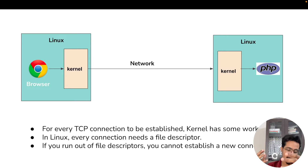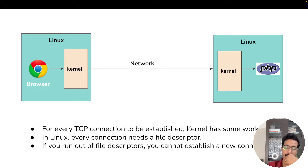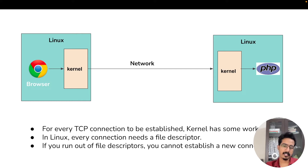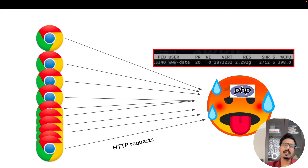If you run out of file descriptors you cannot establish a new connection. Fortunately, you can always change this limit — it's just a system configuration parameter that you can edit and change to any value you want, such as one million.